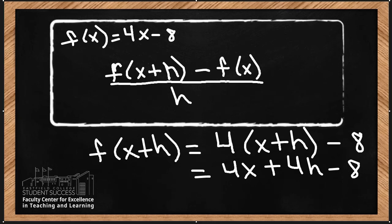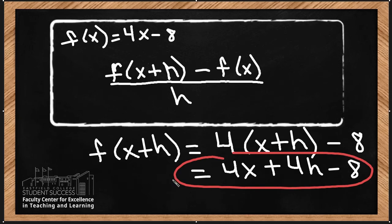So this is what I have so far: 4x plus 4h minus 8.